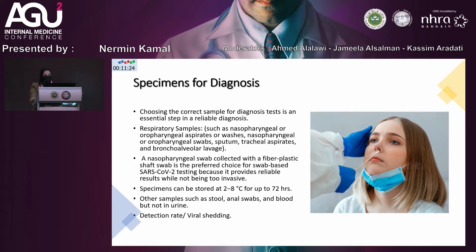Other sample types from which virus can be detected include stool, anal swabs, and blood — though blood has the lowest viral detection rate, so molecular testing of blood is not standard. Urine has zero detection rate. Detection rate is highest with lower respiratory samples such as bronchoalveolar lavage, followed by sputum, then upper respiratory samples, then stool and anal swabs, and lastly blood.